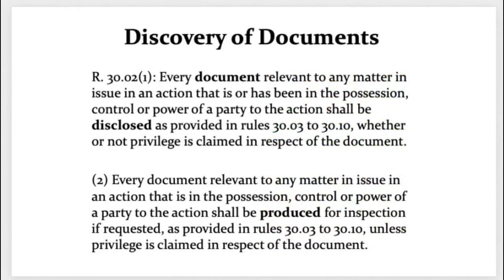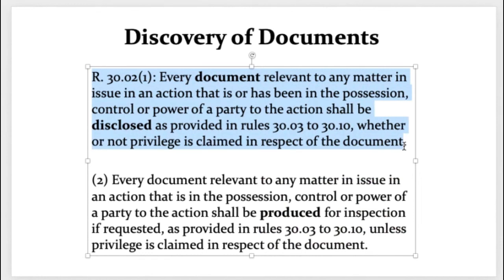When it comes to documentary discovery, these are the two key rules from your assigned readings. The first introduces the concept of disclosure — Rule 30.02. Every document relevant to any matter in issue in an action, that is or has been in the possession, control, or power of a party to the action, shall be disclosed as provided in these rules. Disclosure means telling other parties that a document exists — letting them know of the existence, or former existence in some cases, of a document.